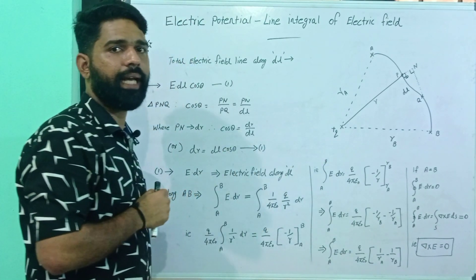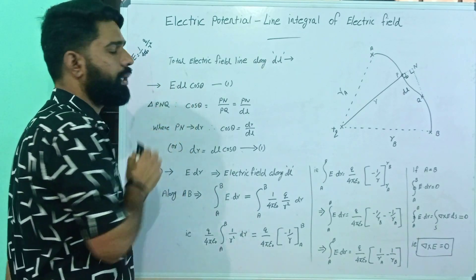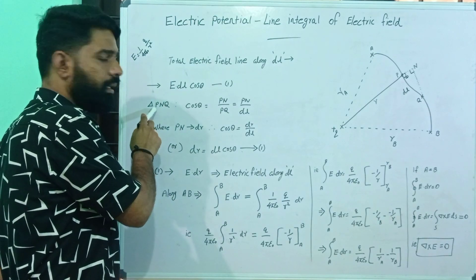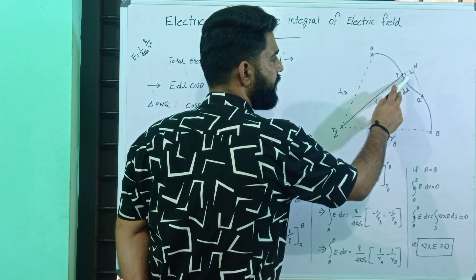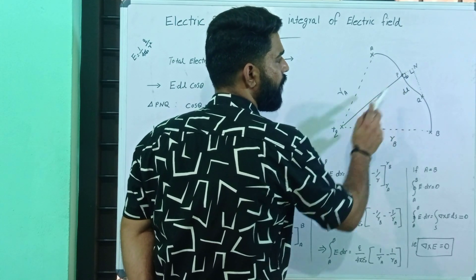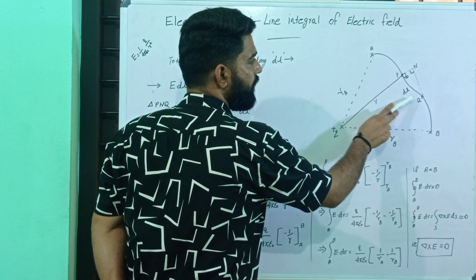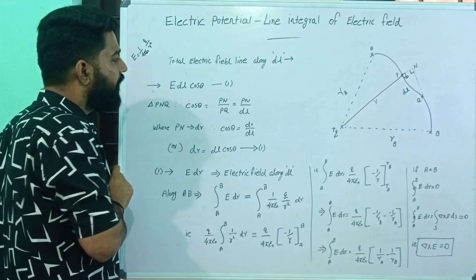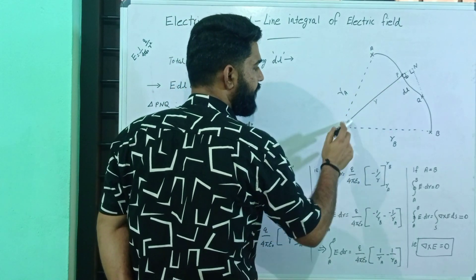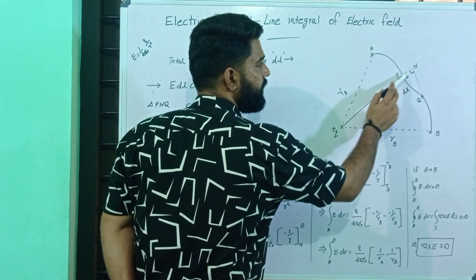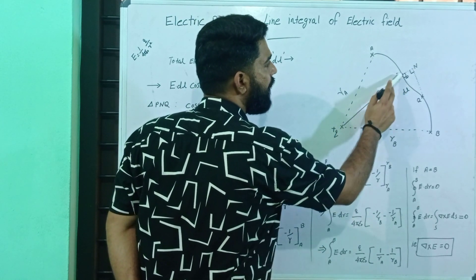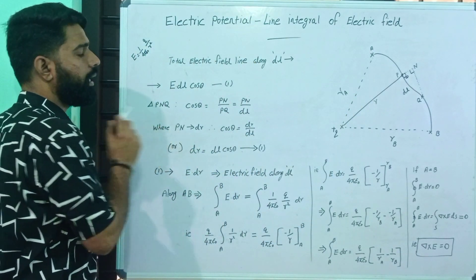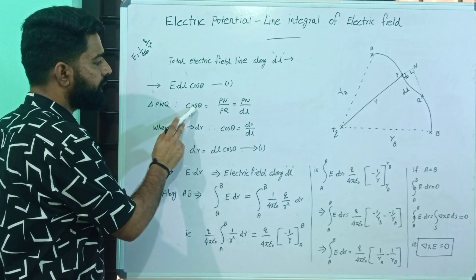The total electric field is due to the positive charge Q. We consider E·dL·cosθ. For the triangle PNQ, cosθ equals PN divided by PQ. Since PQ equals dL, we get cosθ = PN/dL. The position vector change along the radial direction, PN, equals dr.